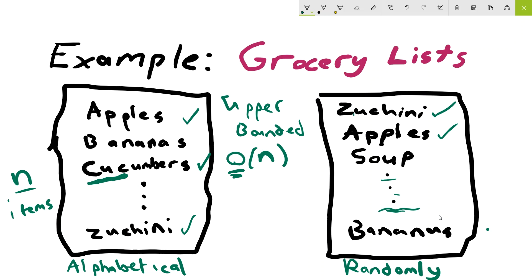So the right list has an upper bound of O(n). Now we know two upper bounds. We know that the list on the left has an upper bound of O(log n). And then the list on the right, so this is the left. The list on the right has an upper bound of O(n). So as a result of that, we could say that alphabetical grocery list is asymptotically faster than the randomly sorted list.